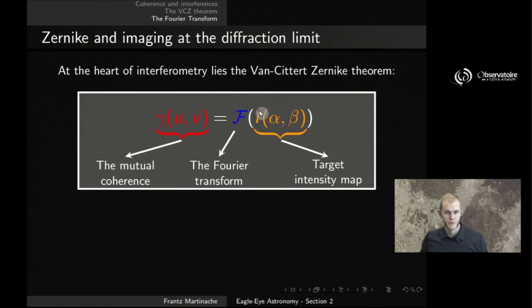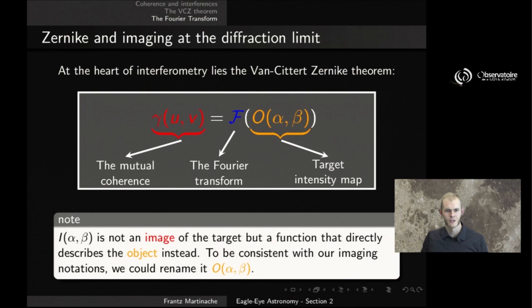Now you notice here that I'm using the letter I, simply because it happens to match the first letter of the word intensity, because I is really an intensity map. But if I wanted to be consistent with the notations I've used, for example in the context of conventional imaging with a telescope, I would have to modify my notations, because I is typically the letter you use to describe an image. And I in this context is not an image of the target, but a function that directly describes the object itself. And so to be consistent with these imaging notations, let me just, for the moment being, rename that function I into O, a function that describes the object. You'll see that I have a very good reason for doing this in just a few minutes.